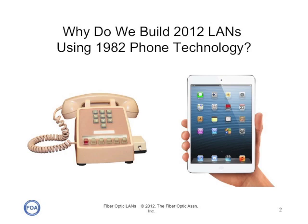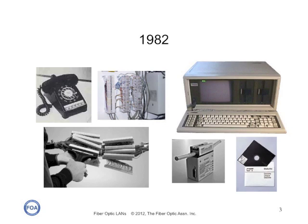Let me show you what we're talking about. In 1982, the typical office had multi-line phones, where every line had a pair of copper conductors carrying what we call a POTS signal — P-O-T-S — plain old telephone service, and offices were full of copper cables and punch-down blocks.